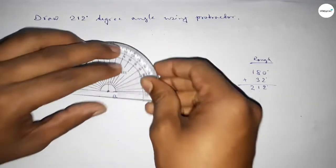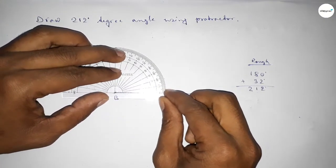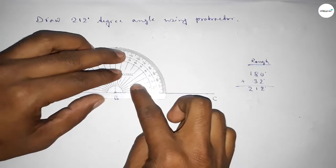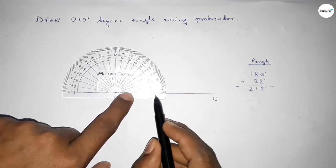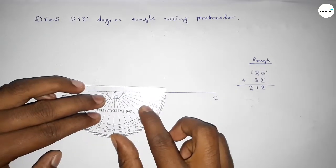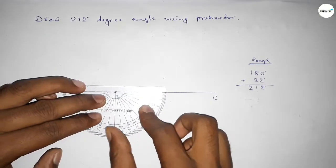So first we have to count 180 degree. Putting the protractor on the point B and counting first 180 degree. So this is total 180 degree angle. Plus, putting the protractor on the point B by this way.